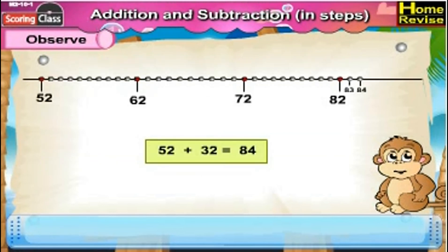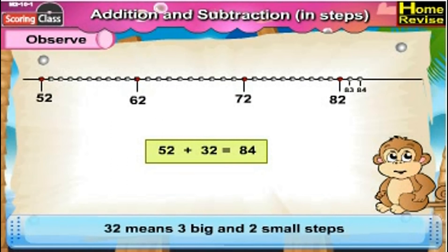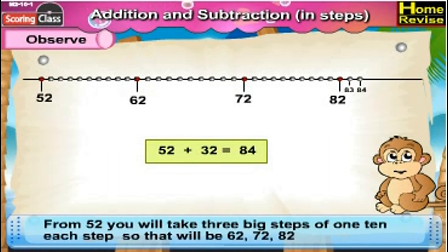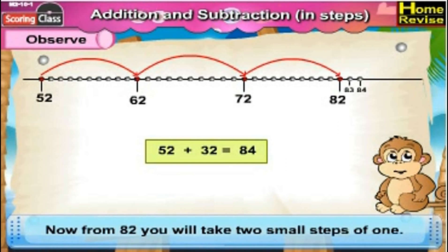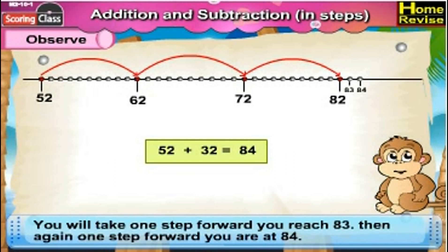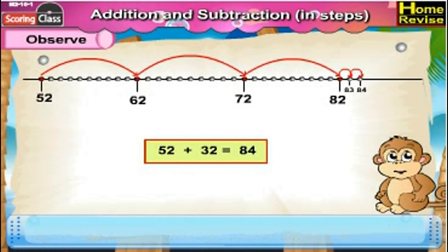52 plus 32 is 84. Now, 32 means 3 big and 2 small steps. From 52, you will take 3 big steps of 10 each — that will be 62, 72, 82. Now from 82, you will take 2 small steps of 1. One step forward, you reach 83. Then again one step forward, you are at 84. So 52 plus 32 is 84.